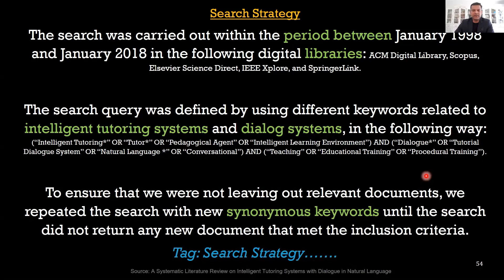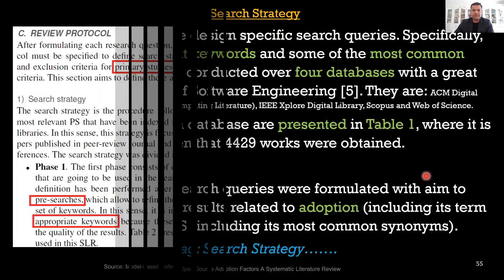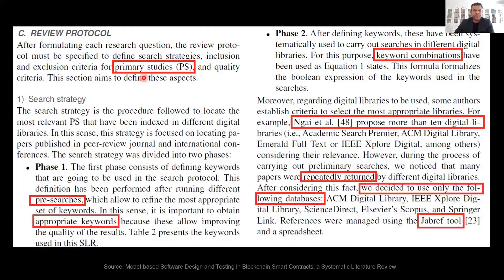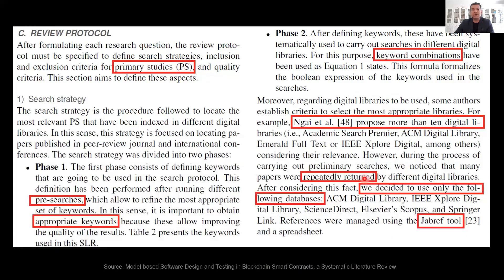A few more examples on review protocol: in this paper they refer to primary studies as 'PS'. Importantly, they have given a justification paragraph explaining why they decided to select only one or two databases — the rest were all giving similar results. If you want to include this in the methodology section, this is a good template to use.